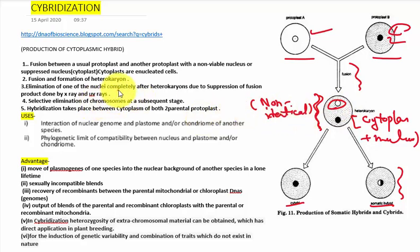By the X-ray and the UV rays, subsequently the selective elimination of the chromosome takes place. And at last the hybridization takes place between the cytoplasm of both the parents and the nuclear content of only one parent.